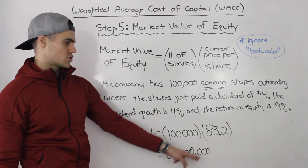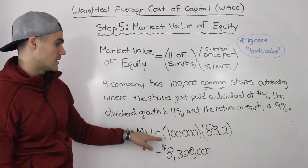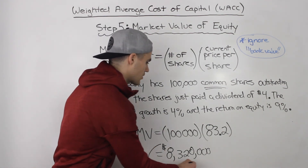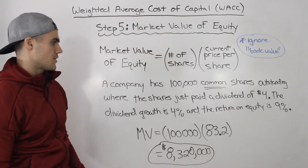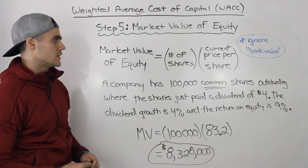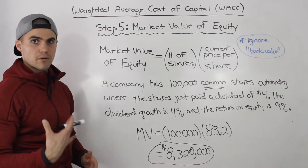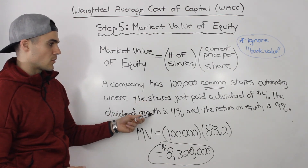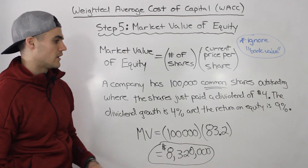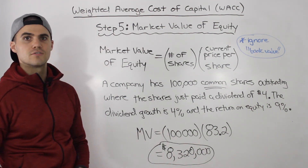Now that we have the current price per share of $83.20, we multiply it by the number of shares, which is 100,000, giving us a market value of equity of $8,320,000. This is the most complex scenario you'll encounter. Usually the current price per share is given directly, but sometimes you'll need to use the dividend discount model with dividend and growth information to find it first, then multiply by the number of shares.